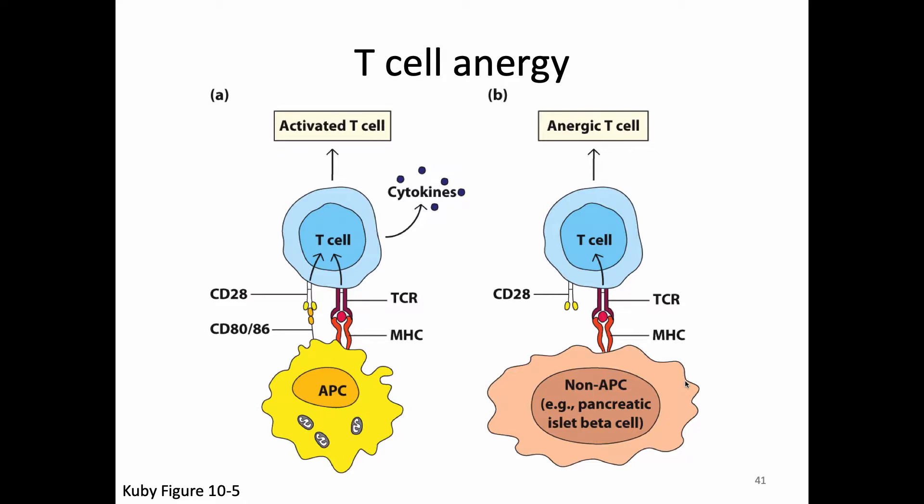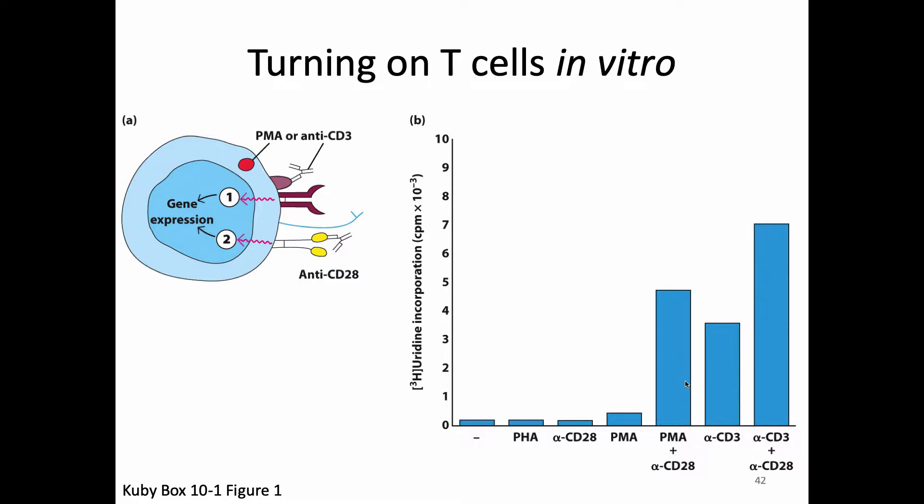This information is important if you work with T-cells in vitro and want to activate them. It's not enough to give them antigen — if you just give your T-cells in a dish antigen, you're going to anergize them, which is probably not what you want in your experiment. Typically when we want to turn on a T-cell, we use some way of turning on the T-cell receptor, and we also use something like an antibody against CD28 to give our cell both signals.